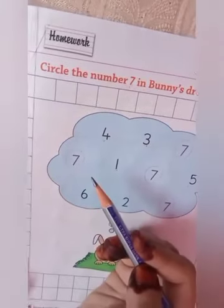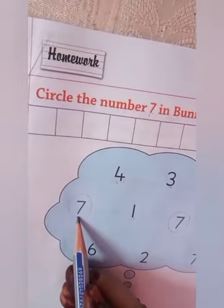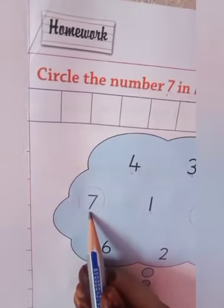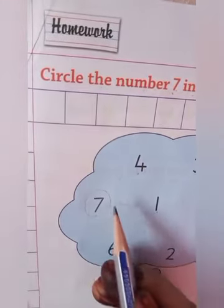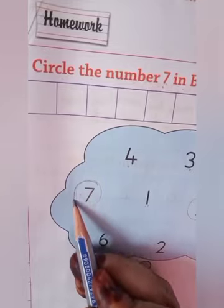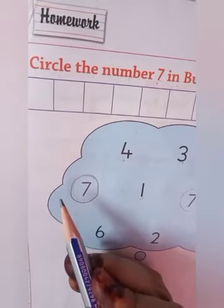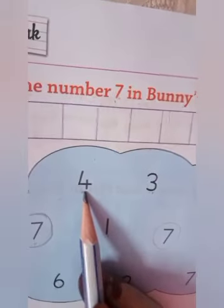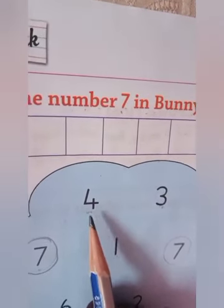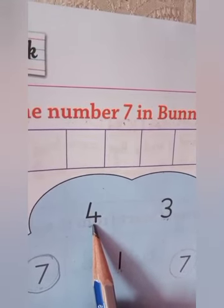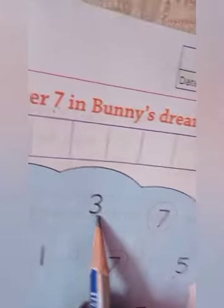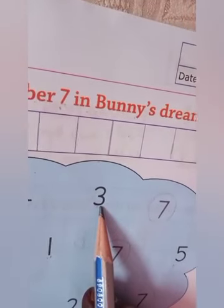So let's start! See, students — which number is this? Seven, right! So we will circle the number seven. Now, which number is this? Four. No, no — we will not circle the number four. Now which number is this? Three, right! We will not circle number three, students.